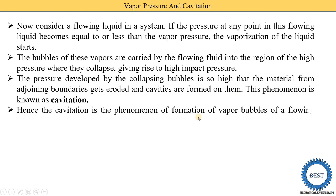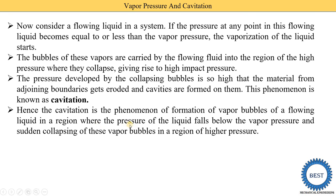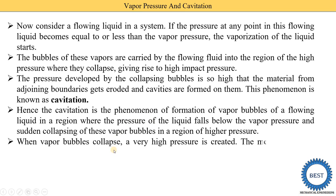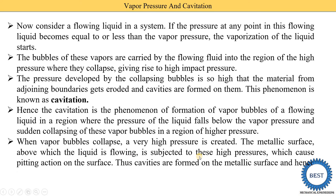Hence cavitation is the phenomenon of formation of vapor bubbles in a flowing liquid in a region where the pressure of the liquid falls below the vapor pressure. The vapor bubbles are created in the low-pressure region, flow with the fluid, and reach a high-pressure region where they suddenly collapse. When the vapor bubbles collapse, very high pressure is created and the metallic surface is subjected to this high pressure, causing a pitting action on the metal surface, forming cavities.